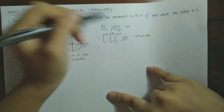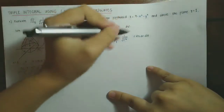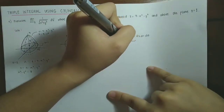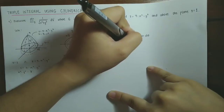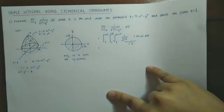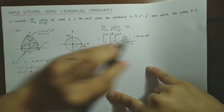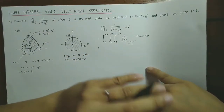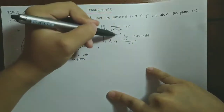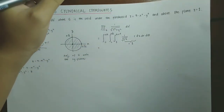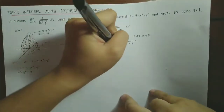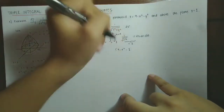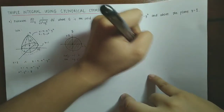Now 1/r times r equals 1, so the integrand simplifies to 1. Integrating with respect to z, we just get z evaluated from 1 to 9 - r², giving 9 - r² - 1.